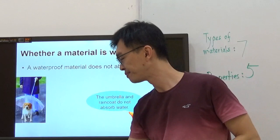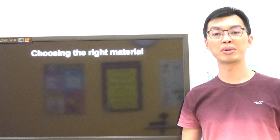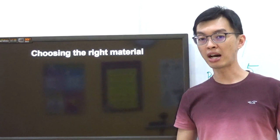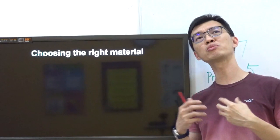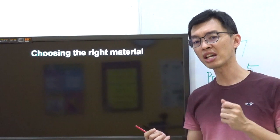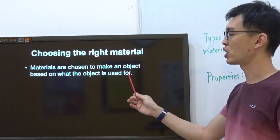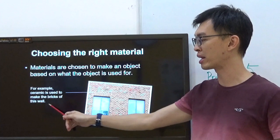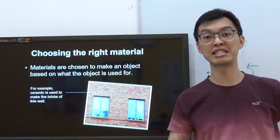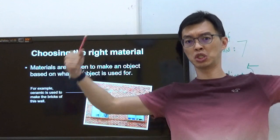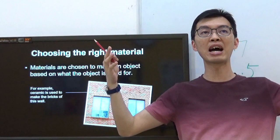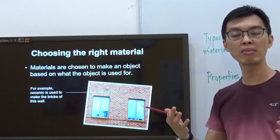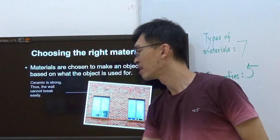Now we're going to choose the right material. Sometimes we have to decide: should I use plastic, metal, or something else? I have to think of the properties. Materials are chosen to make an object based on what the object is used for. Ceramic houses, meaning the bricks of this wall. Our HDB uses cement wall. Why? Because it is strong. You don't want a house seven levels high to start collapsing. It must be strong, able to withstand so much people standing on it. Ceramic is strong, the wall cannot break easily.